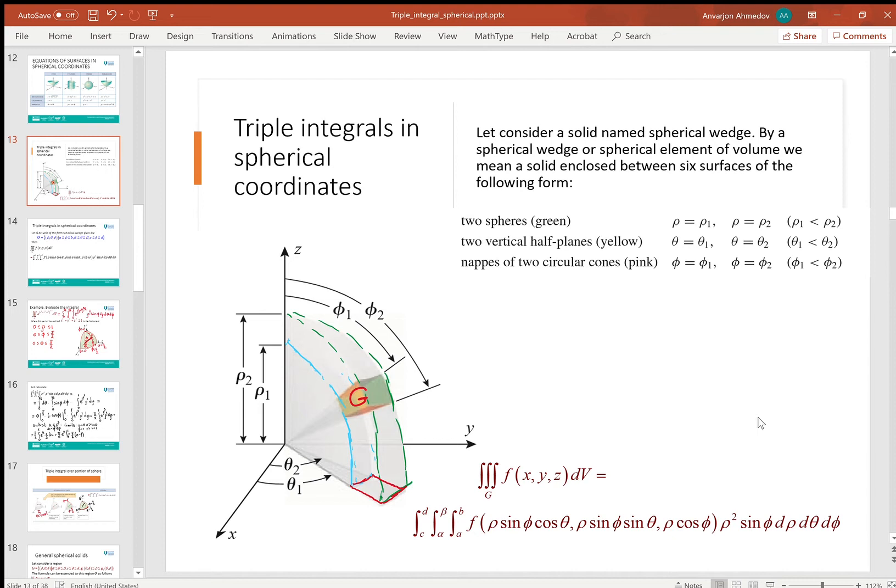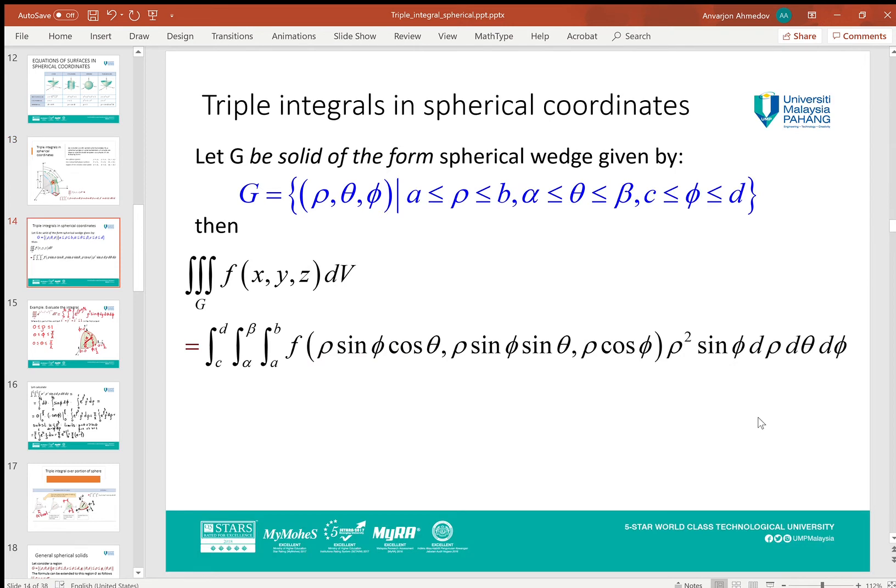limits of the iterated integral according to the sphere and vertical half-plane and two circular cones. Let me rewrite this formula one more time. So what we do: we change x, y, z by spherical values multiplied by the Jacobian in the spherical coordinates transformation